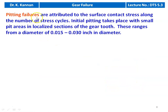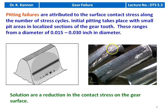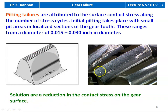Pitting failures are attributed to surface contact stress along the number of stress cycles. Initial pitting takes place in small pit areas in localized sections of the gear tooth, ranging from 0.015 to 0.03 inches in diameter. These represent removal of material. The solution is a reduction in contact stress on the gear surface.